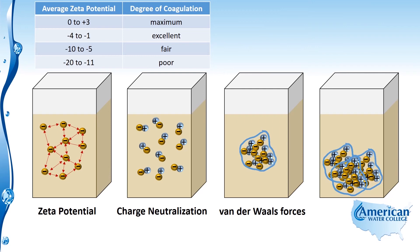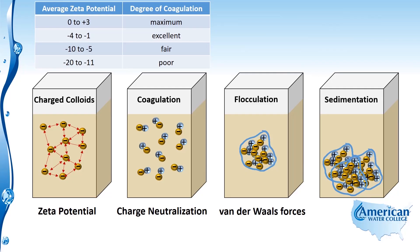To summarize how this process works using the jars: on the far left we start with charged colloids that are repelling one another due to the zeta potential and will not come together. In the next jar, coagulation occurs once we add the aluminum sulfate, because of the addition of positive ions. In the next jar, flocculation begins — micro floc becomes macro floc and grows even larger. In the final jar we see the sedimentation process. This is a brief overview of coagulation, flocculation, and ultimately sedimentation.